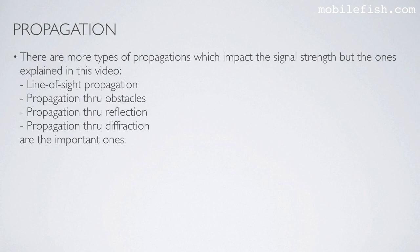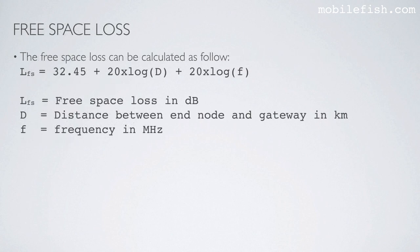There are more types of propagation that impact signal strength, but the important ones explained in this video are: line-of-sight propagation, propagation through obstacles, propagation through reflection, and propagation through diffraction. I have already explained what free space loss is, but you can calculate it using a specific equation. The free space loss is expressed in decibels and depends on the distance between the end node and the gateway, and the frequency.